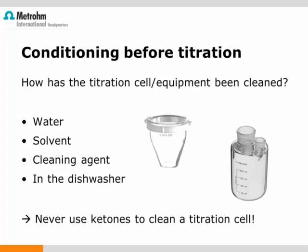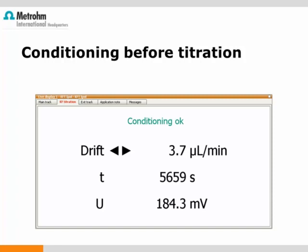As strange as it may sound, sometimes the cleaning of the titration cell is the reason for high drift values. Water or solvents like alcohols are fine to clean Karl Fischer equipment. Cleaning agents can also be used. All those options are fine as long as no ketones are used. Ketones undergo a side reaction with methanol — this reaction releases water. If traces of ketones remain in the titration cell, those traces can react with the methanol in the Karl Fischer reagent, and the drift can be too high to start a titration.